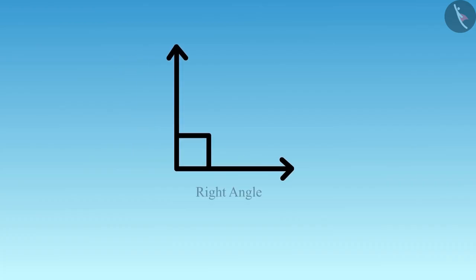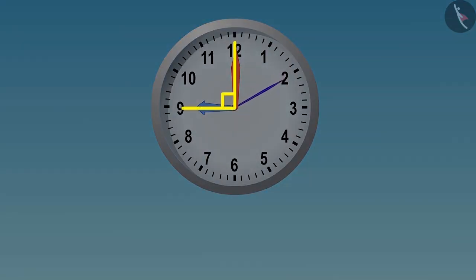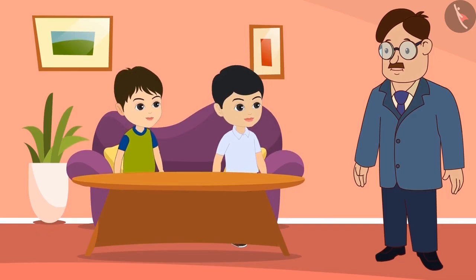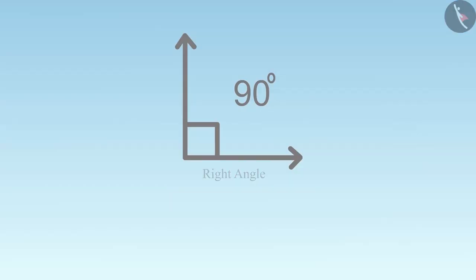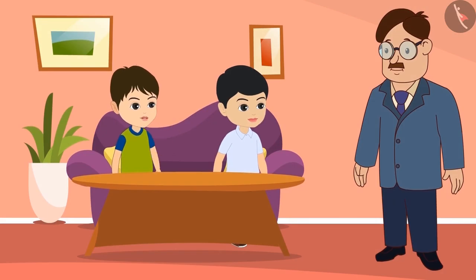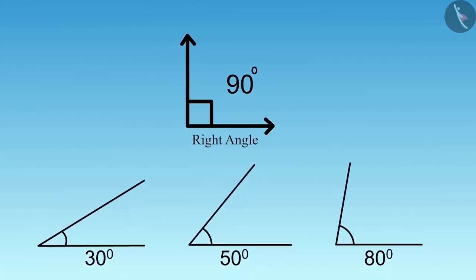Do you know the measurement of a right angle, children? 90 degrees. What is meant by 90 degrees, Uncle? When it was 9 o'clock, the hands of the clock were making a right angle — that means the rotation between them was 90 degrees. Then what will be the angles less than a right angle? When the right angle is 90 degrees, the angles less than that could be any number of degrees less than 90, such as 30 degrees, 50 degrees, or 80 degrees.